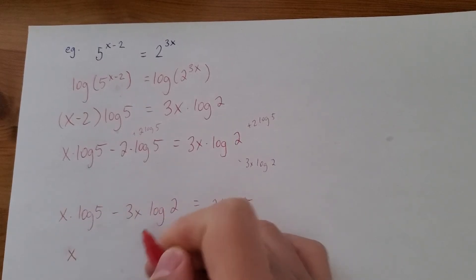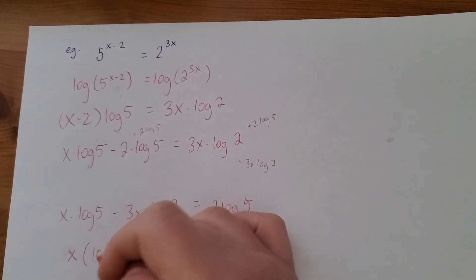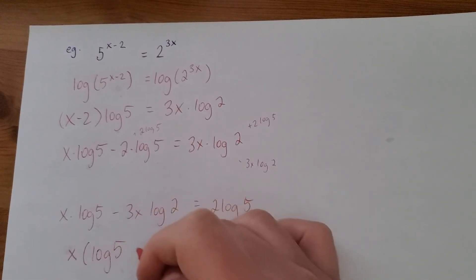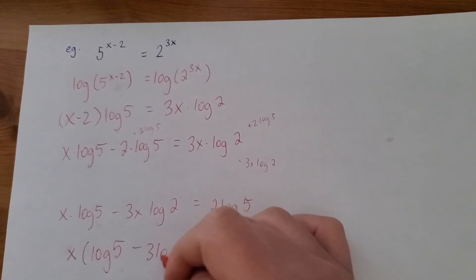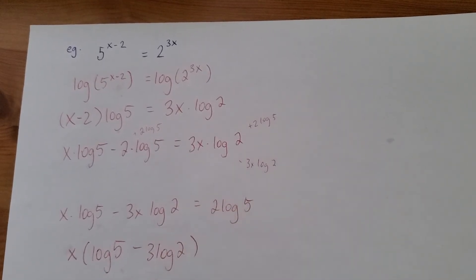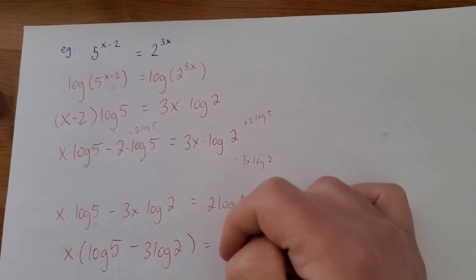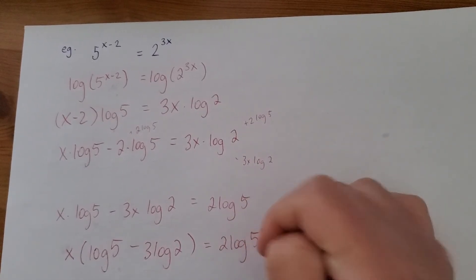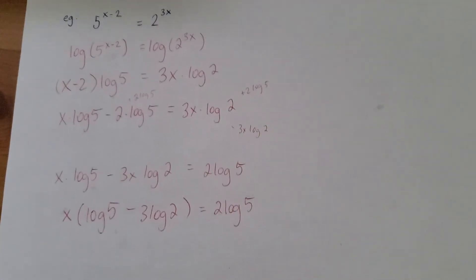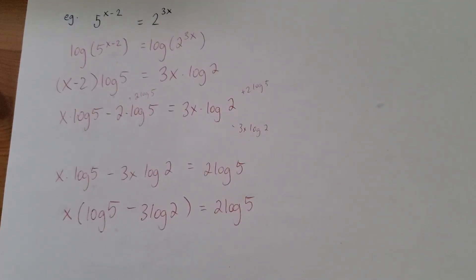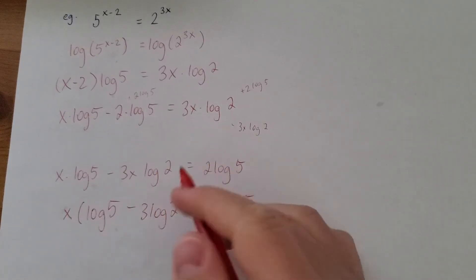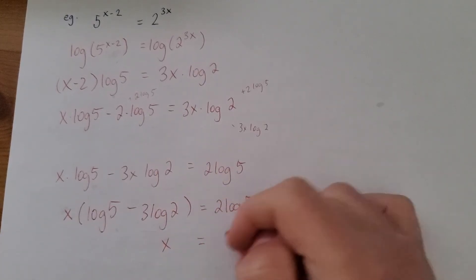So if I factor an x from both of these terms, it'll look like this. I just divide the x out of both of those. Remember, it's just the opposite of distributing. I hope you're all right with that. So I factored an x out of these two guys. And to get x by itself, now I just have to divide.